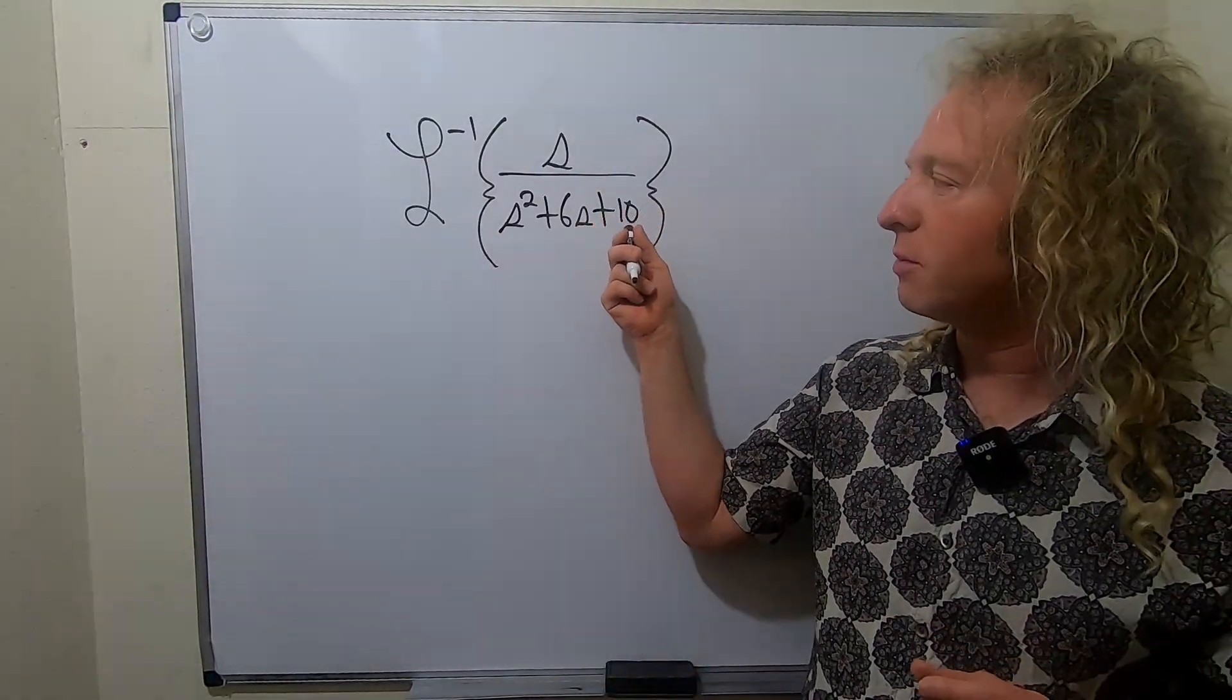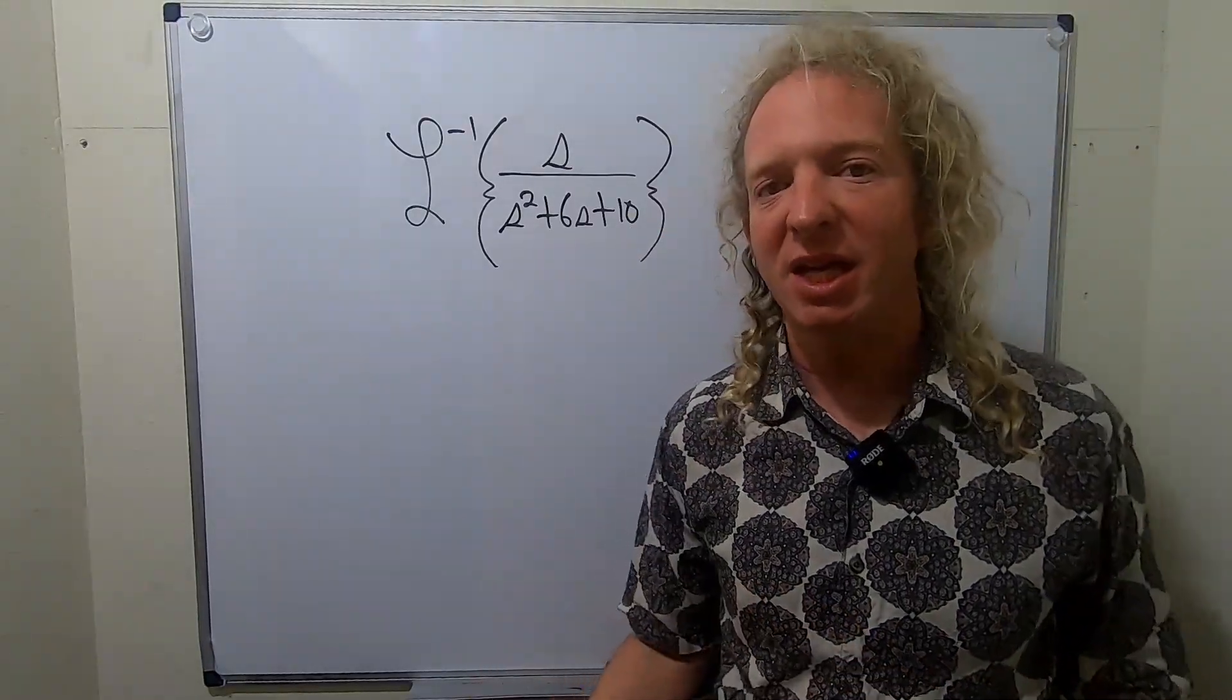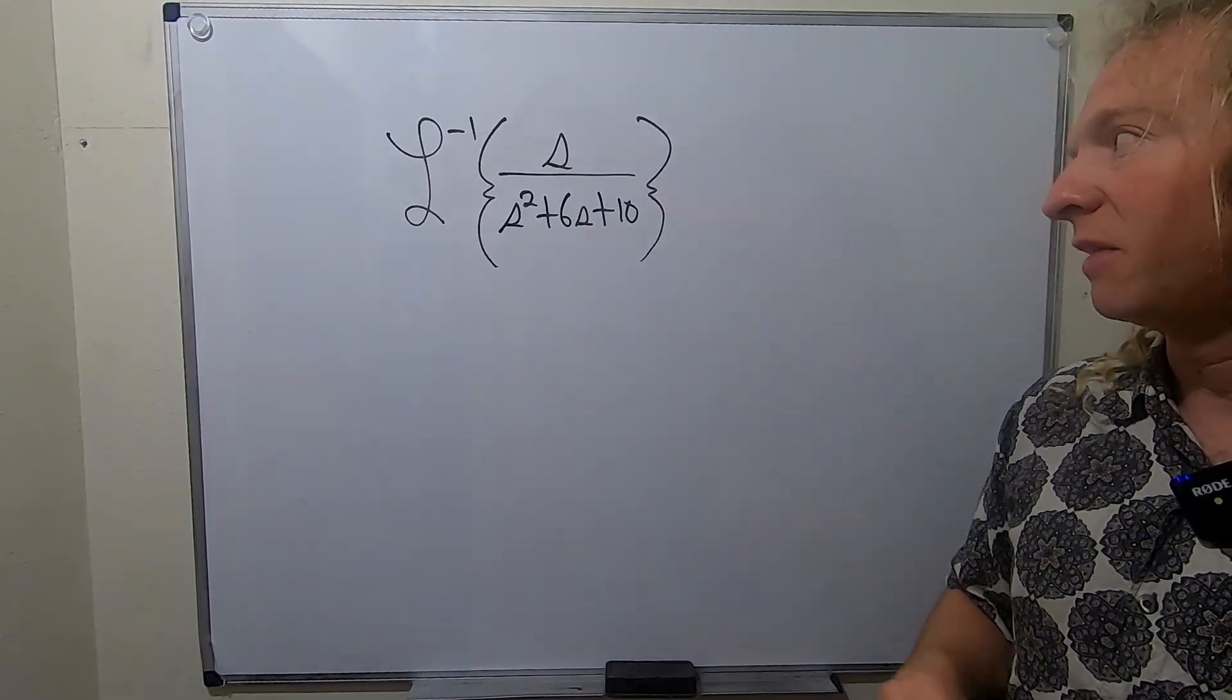So let's think, we need two numbers that multiply to 10 and add to 6. Well, 2 times 5 is 10, that's not going to add to 6. 1 and 10, I think we're out of luck.